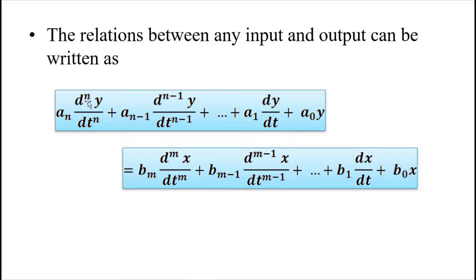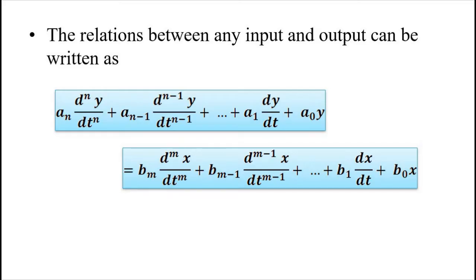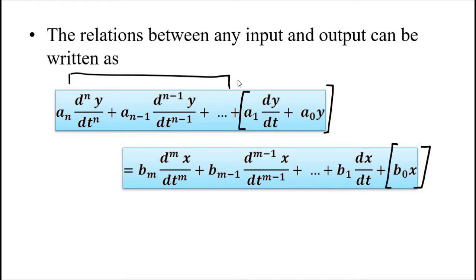It is the constants on either side — a and b — and the order of the differential equation on both sides which give us different types of measuring systems: zero order, first order, second order, and so on. Here y is the output and x is the input. A first order system looks something like this: a1 dy/dt + a0·y = b0·x. Comparing this with the general expression, certain terms are present and all other constants are zero.